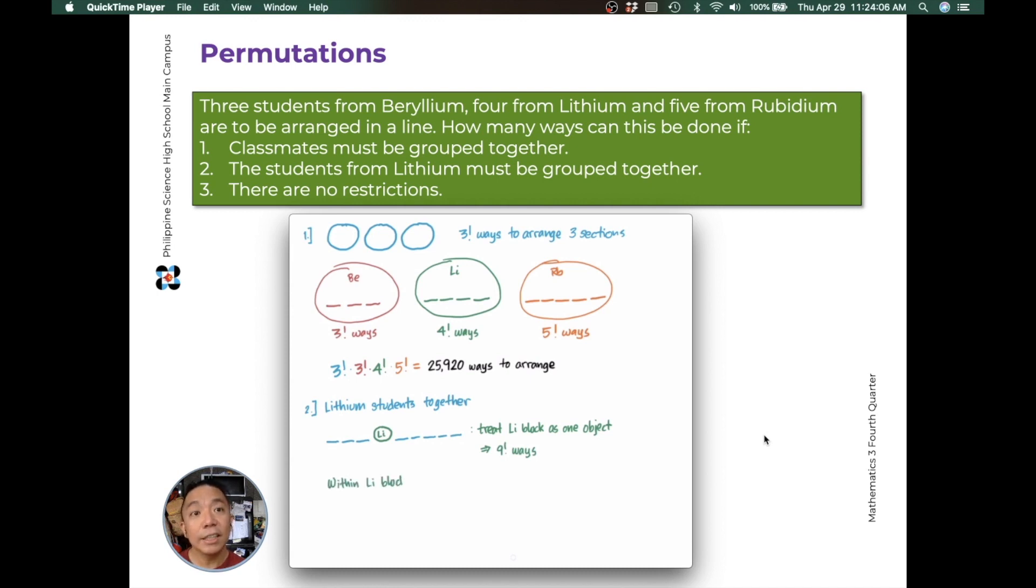Now, looking within the lithium block, we'll have 4 possible spaces to arrange the 4 lithium students. Within the lithium block, there are 4 factorial ways of arranging them. So the total number of ways to arrange the 8 students along with the lithium block, also considering the arrangement inside the lithium block, this will be 9 factorial times 4 factorial. And this gives us 8,709,120 ways to arrange our students as specified in step 2.